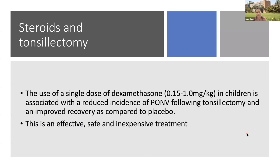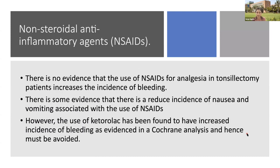Steroids have an important role in this surgery due to high incidence of PONV. Dexamethasone in a dose of 0.15 to 1 mg/kg is associated with reduced incidence of PONV, improves recovery by reducing pain, and is inexpensive. Regarding NSAIDs — there is now no evidence that NSAIDs used in analgesic doses increase bleeding incidence, and there is evidence of reduced PONV with NSAID use, so there is a potent indication for their use. There is some controversy regarding ketorolac specifically, where some positive evidence of increased bleeding was found in one analysis, so we can be careful about ketorolac while other NSAIDs can be used safely.